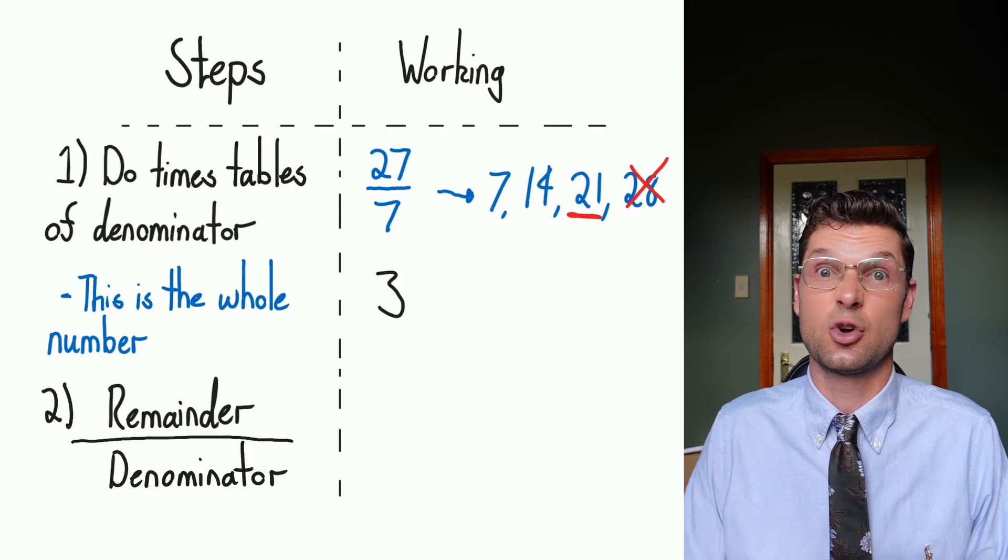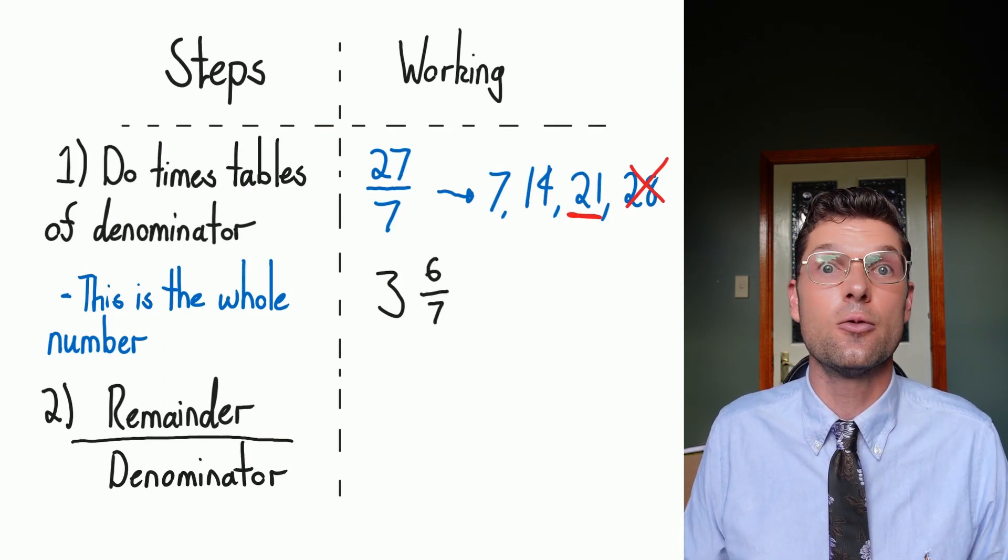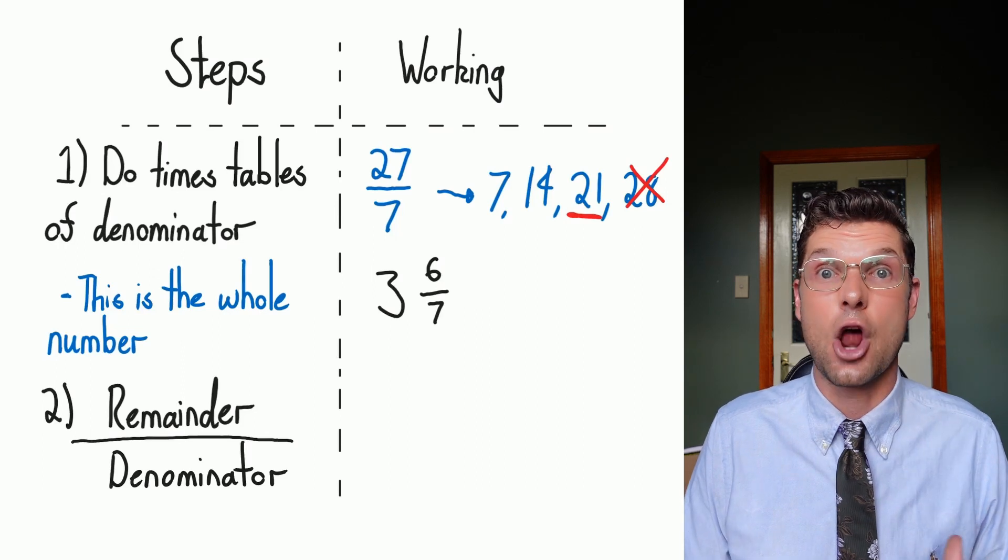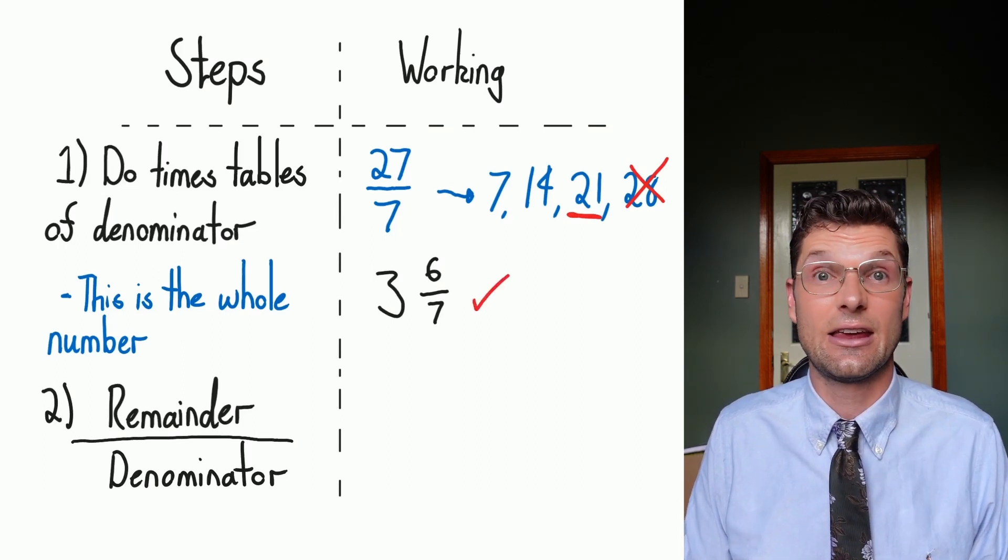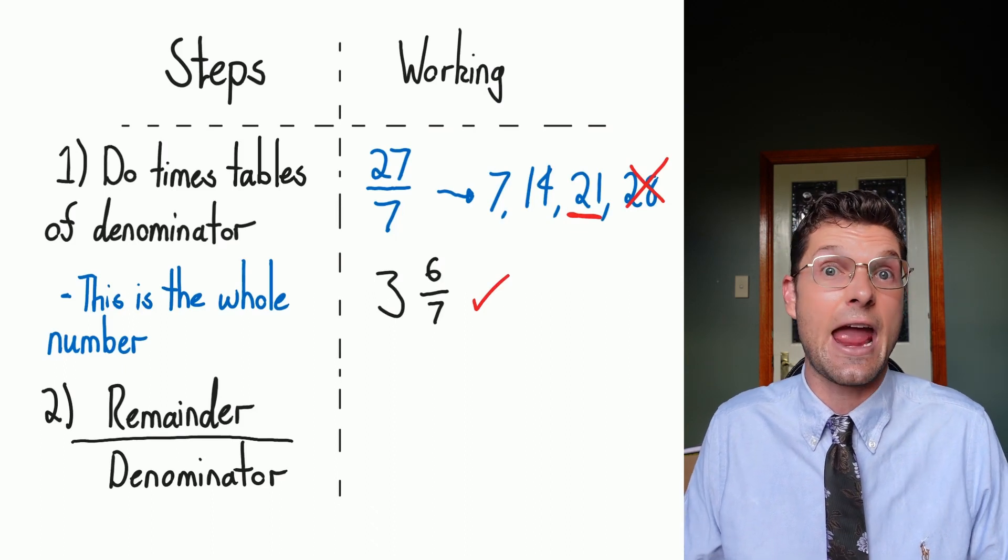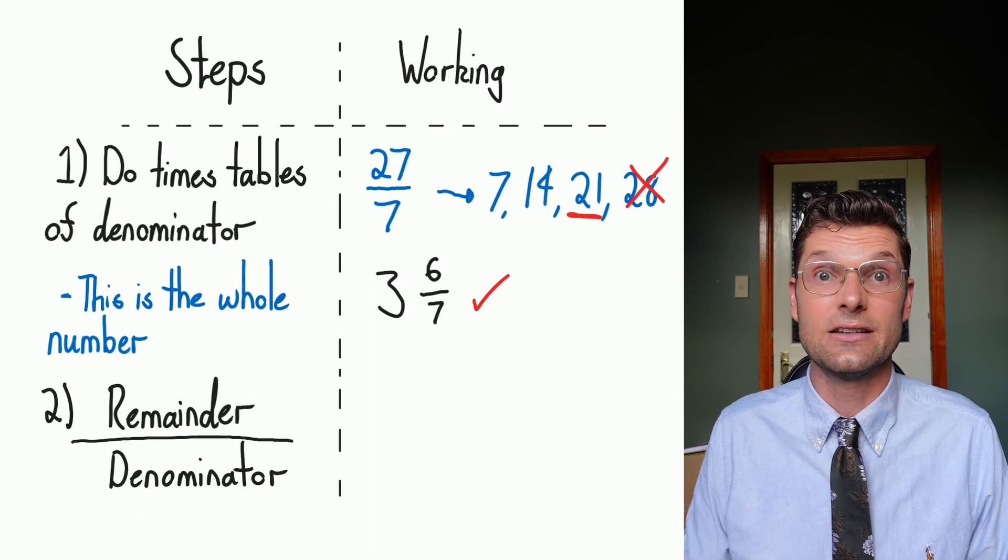That three is the whole number that's gonna go out the front of our mixed numeral. Then all we've gotta do is the remainder. So 21 to 27 is six divided by the original denominator, which is seven. So 27 over seven becomes three, six over seven. The big skill here is doing those multiplications, seeing how many times that bottom number fits into the top, and then finding the remainder really quickly.